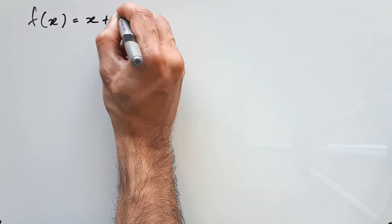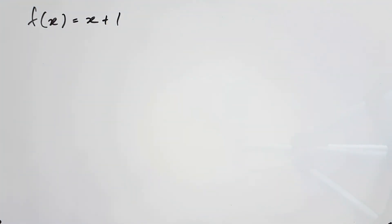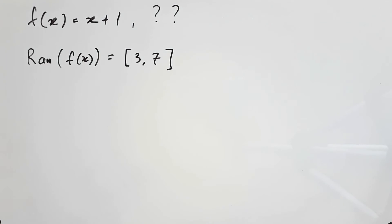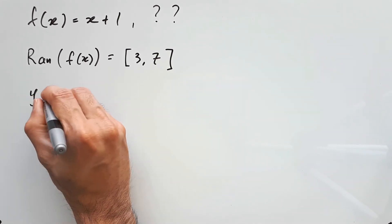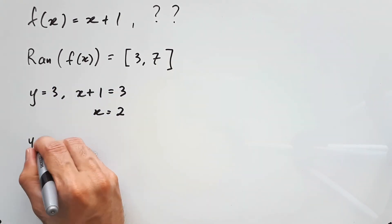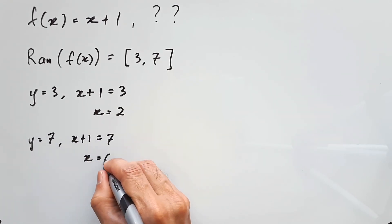f(x) equals x plus 1, and let's say we are not given any sort of limit, but we're given that the range of f(x) is from 3 to 7 including both limits, and that does sort of infer that there might be some kind of limit here. To uncover that, we need to just work out what the x values are when y is 3 and y is 7. We find that when y is 3, x plus 1 equals 3, and so x is 2, and for y equal to 7, we find that x is 6.